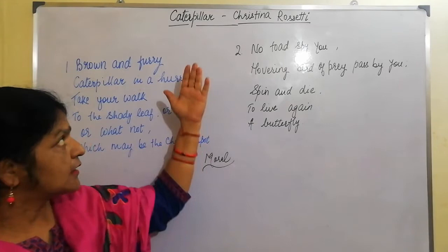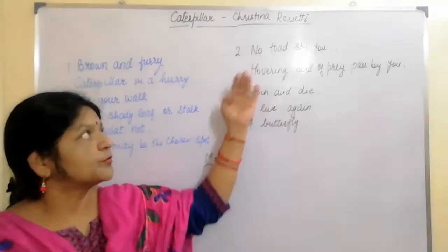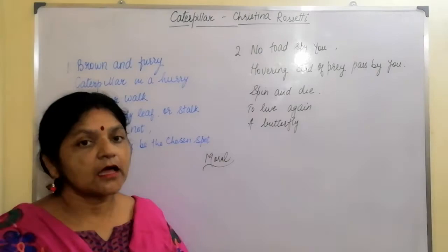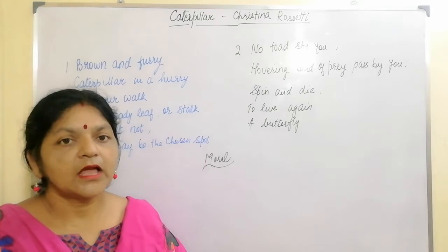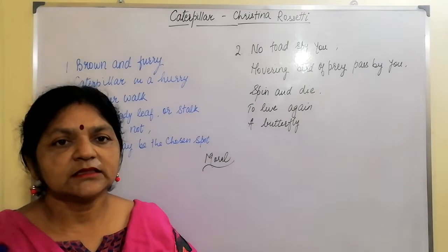Now I will tell you something about the poet Christina Rossetti. She was an English poet who wrote a variety of romantic, devotional and children's poems. She was famous for writing the poems called Goblin Market and Remember. She was born on 5th December 1830 and died on 29th December 1894.